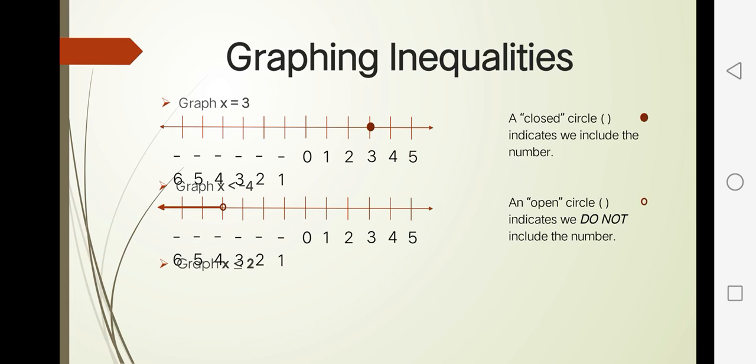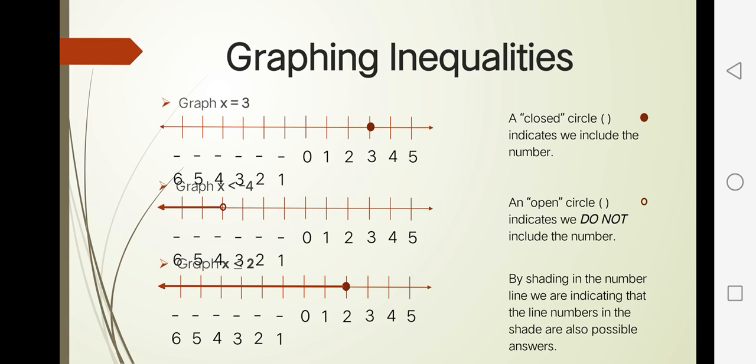Let's graph x is less than or equal to 2. So let's find 2 and then all of the other answers. The solution must be less than 2 or equal to 2. By shading in the number line, we are indicating that the numbers in the shade are also possible answers.